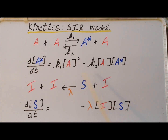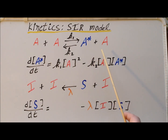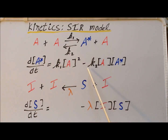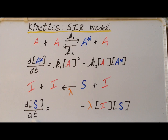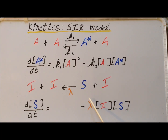We notice a formal similarity between the infection process in the SIR model and the deactivation process in the Lindemann-Hinshelwood mechanism. I've color coded the particular species involved to highlight the similarity. This deactivation process occurs with a second order rate constant K2, so the concentration of A star is removed by K2 times the concentration of A times the concentration of A star. Similarly, as we infect susceptibles, the number of susceptibles decreases, giving a negative derivative — minus lambda times I times S. We see that lambda is also a second order rate constant, quite analogous to K2.